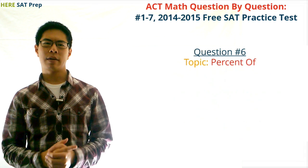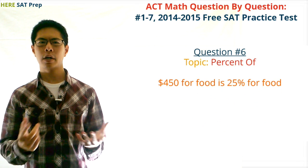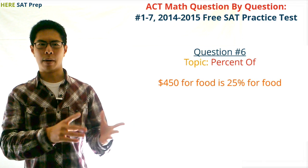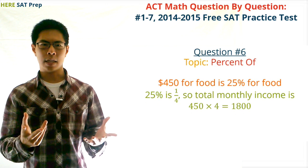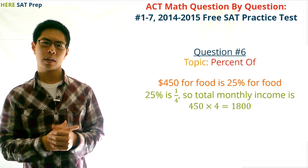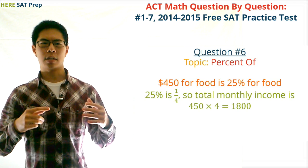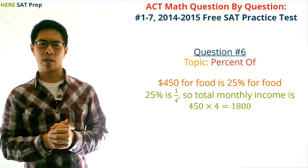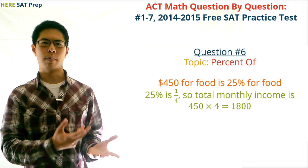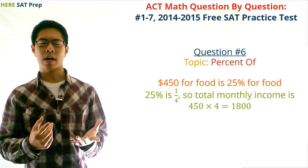Question number six. The topic of this question is percent of. We first identify that David spends $450 per month on food, and the pie chart shows that he spends 25% per month on food. So $450 is 25% of his monthly income, and we'll use this to find his total monthly income. It's easier to recognize that 25% is the same as one-fourth, so if $450 is one-fourth of his income, then his total monthly income is 4 times 450, which is $1,800.